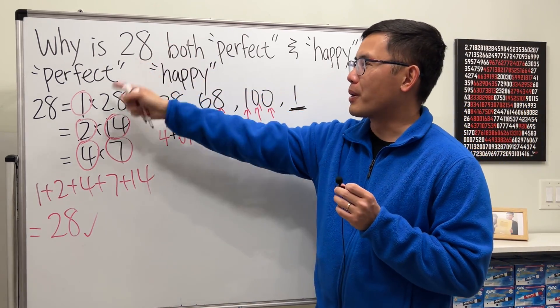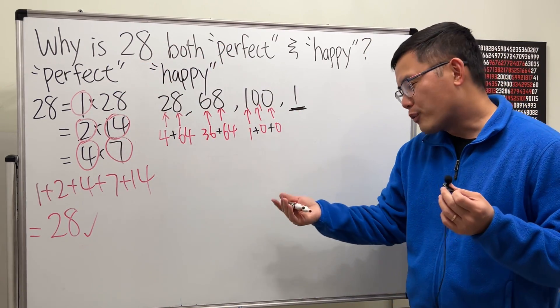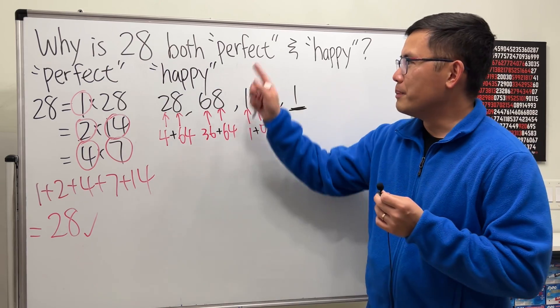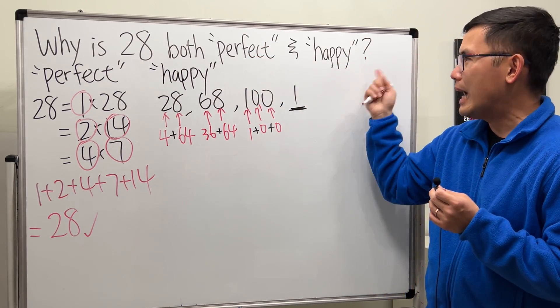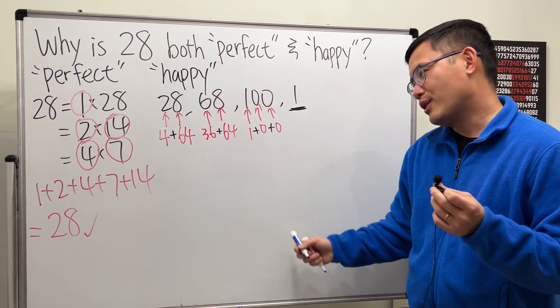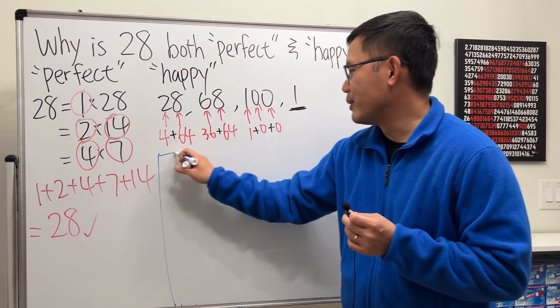So, 28 is both perfect and happy. But unfortunately, not all the perfect numbers are happy. Not all the happy numbers are perfect. So, let me just give you guys an example real quick.